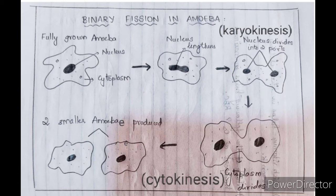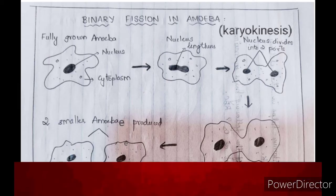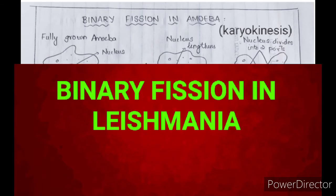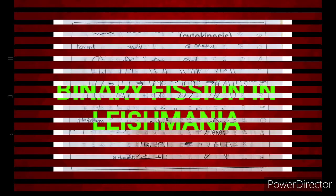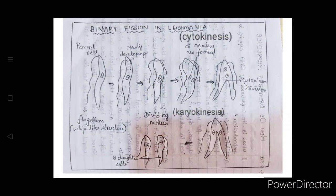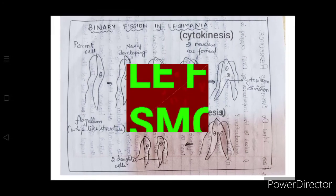In amoeba, binary fission takes place at any plane. Whereas in leishmania — which causes the disease called kala azar in human beings, commonly called sleeping sickness — this organism possesses a whip-like structure termed a flagellum at one end of the cell. Binary fission in leishmania occurs in a definite orientation or definite plane in relation to these structures.